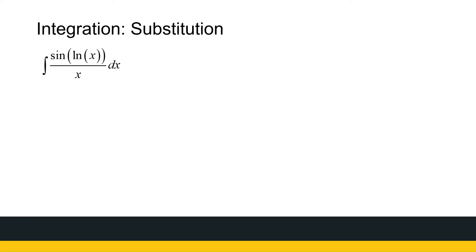Now let's look at the next one. We've got to do a little bit of thinking here. I've got sine of ln x divided by x. What I'm looking for is a function and its derivative present. There's a sine there — the derivative of sine is not there. There's a 1 over x — the derivative of 1 over x is minus 1 over x squared, I don't see that there. There's a ln x — the derivative of ln x is 1 over x. There we go. So I say let u be equal to ln x.